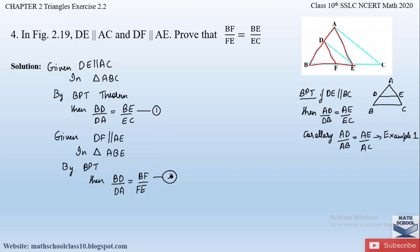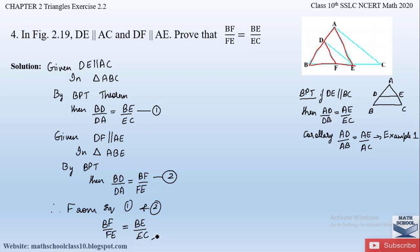Now comparing equation one and equation two, we can see that the left-hand sides are equal, that is BD/DA equals BD/DA. Since BD/DA equals BE/EC from equation one, and BD/DA equals BF/FE from equation two, the right-hand sides must be equal. Therefore, from equations one and two, BF/FE is equal to BE/EC, which is what we had to prove.